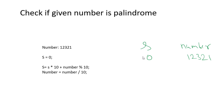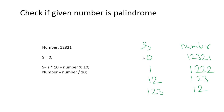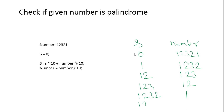So in the first iteration it will be s into 10, which is 0 into 10 = 0, and number remainder of 10 = 1, so s = 1. Number divided by 10 makes the number 1232. In the next iteration s = 1×10 + 2 = 12, number becomes 123. Then 12×10 + 3 = 123, number becomes 12. Then 123×10 + 2 = 1232, number becomes 1. Then 12321 and number is 0.